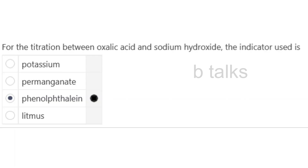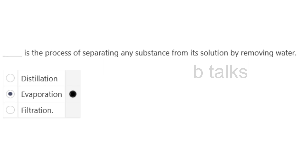For the titration between oxalic acid and sodium hydroxide, the indicator used is: Potassium Permanganate, Phenolphthalein, or Litmus? Answer: Phenolphthalein.